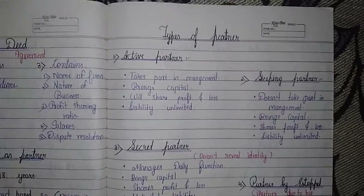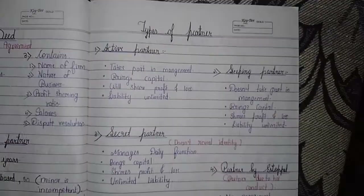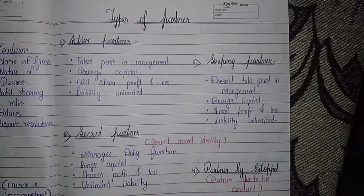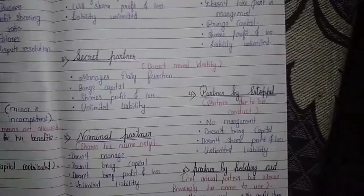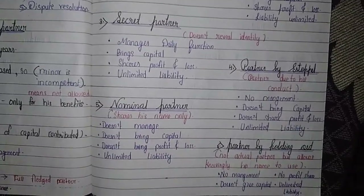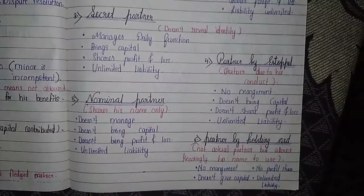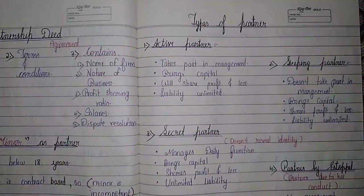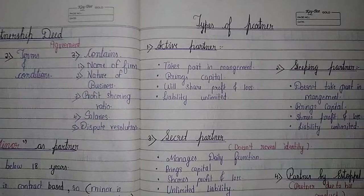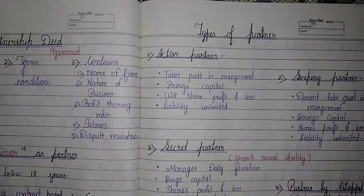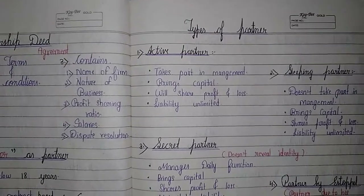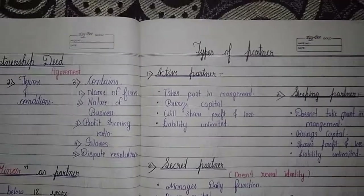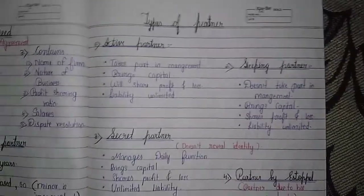Now let's talk about types of partners. There are six types: first is active partner, second is sleeping partner, third is secret partner, fourth is partner by estoppel, fifth is nominal partner, and sixth is partner by holding out. An active partner takes part in day-to-day management, brings capital, takes a share in profit and loss, and has unlimited liability.